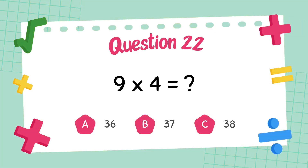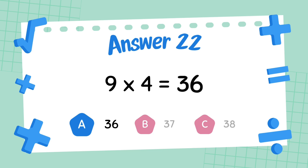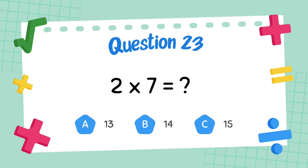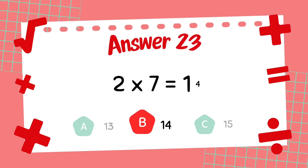What is 9 multiply 4? The answer is 36. What is 2 multiply 7? The answer is 14.